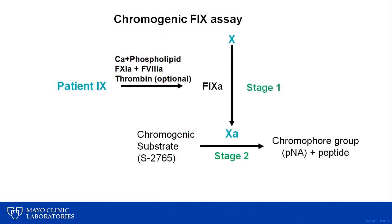In the chromogenic factor IX assay, the rate-limiting step is the factor IX activity present in the test plasma. In the first stage, reagents containing calcium, phospholipid, and activated factors XI and VIII are added to the test plasma. This generates activated factor IX and subsequent activation of factor X. This leads to cleavage of the chromogenic substrate, which is photometrically measured as in the chromogenic factor VIII assay.